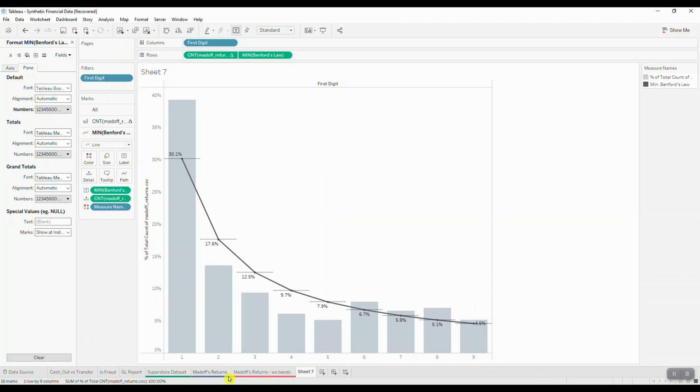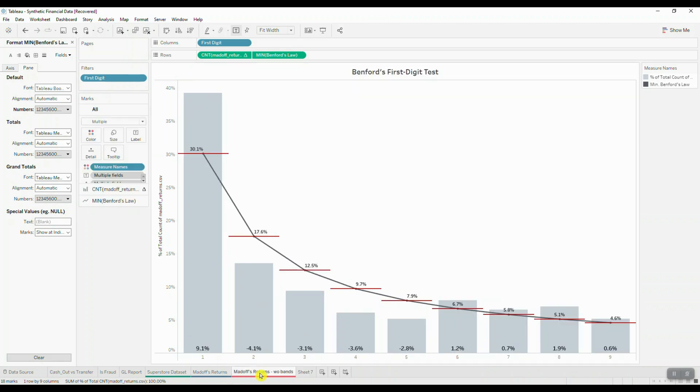Let me jump into one of my other tabs here which actually shows the difference in distribution between our values and Benford's law. Here I've created another calculated field that basically gives me the difference between our actual frequencies versus expected frequencies.